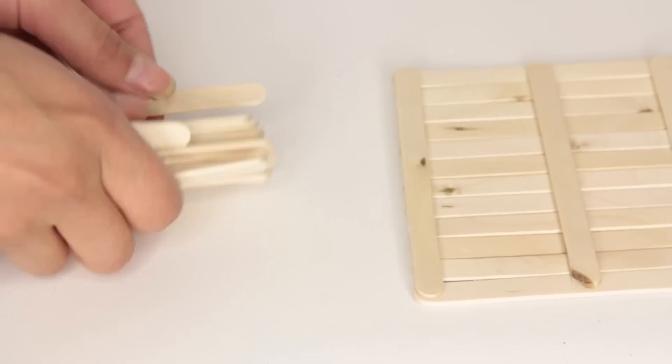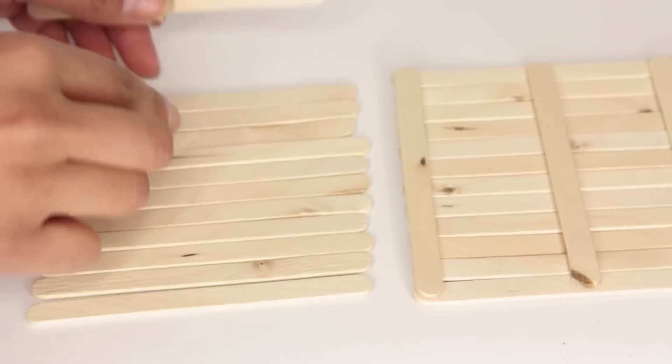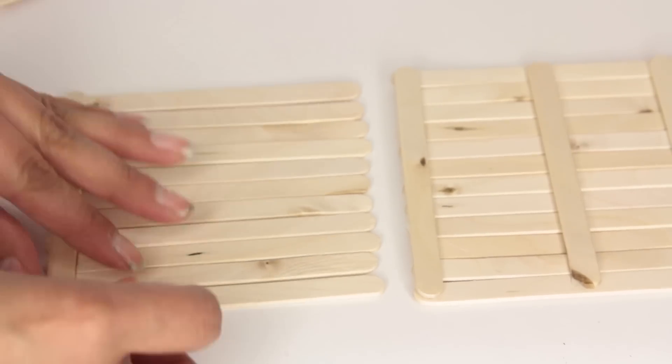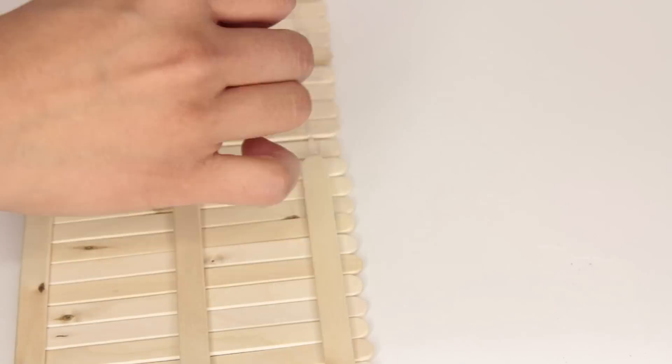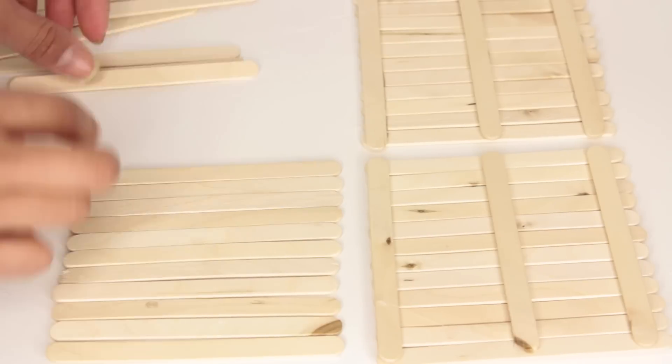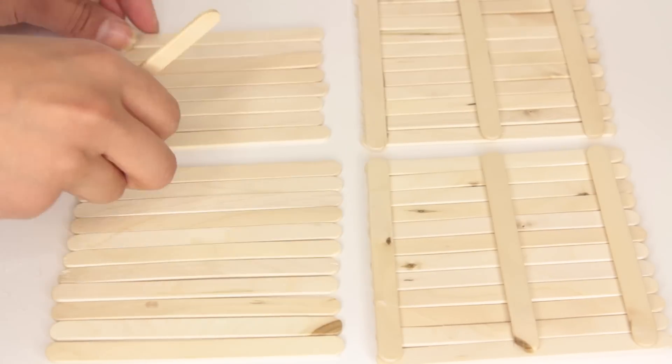When you've got the popsicle sticks laid out, you're going to glue on three popsicle sticks to each section. So you're going to have one at both ends of the laid out popsicle sticks and then in the center of them. You're going to do this to all four sides.